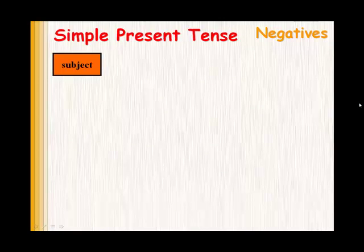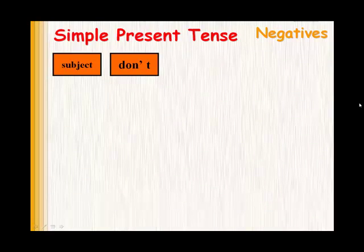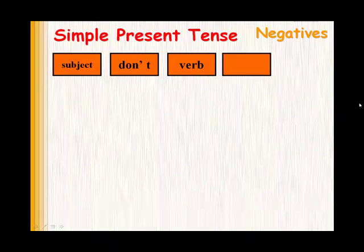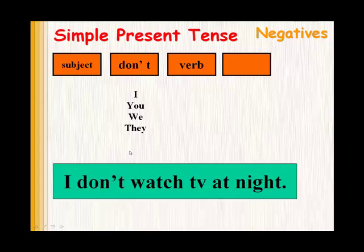Summing up: to create negative sentences, we need a subject, then don't, then the verb, then any other words needed to finish the sentence. We use don't when the subject is I, you, we, or they. For example: I don't watch TV at night — I is the subject, don't, then watch the verb.